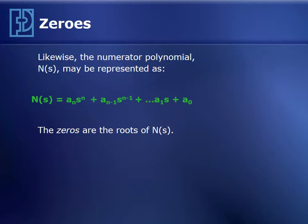Likewise, the numerator polynomial in our transfer function or filter equation has similar form to the denominator. And the roots of this polynomial are called the zeros of the filter.